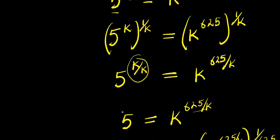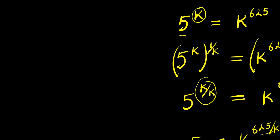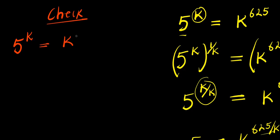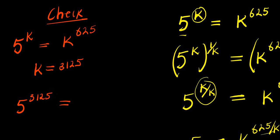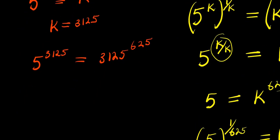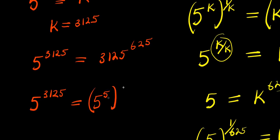Now the next thing we can do is check. We check for the value of k that satisfies the equation 5 to the power k equals k to the power 6/5. So k is 31/5. I have 5 to the power 31/5 equals 31/5 to the power 6/5.